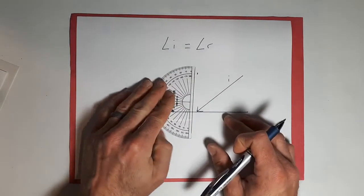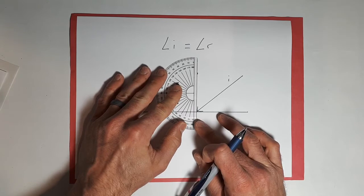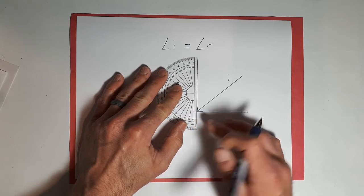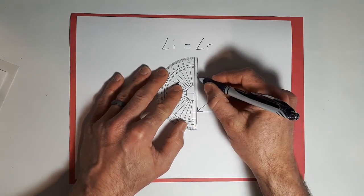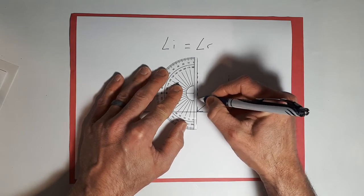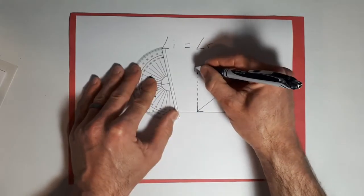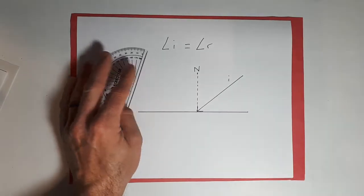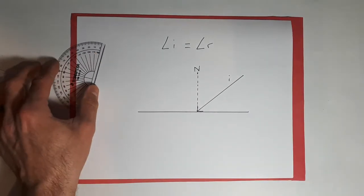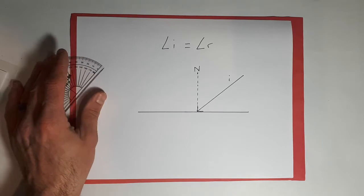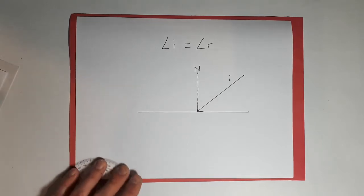And I can even use the back of the protractor actually to make this line. So we're going to trace that dotted line. We're going to mark that with an N. So in French, we call it la normale. And in English, the normal, so pretty similar.